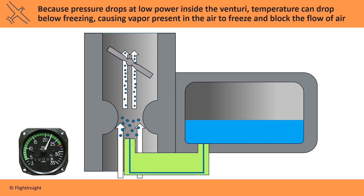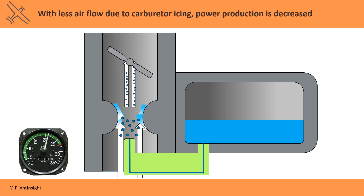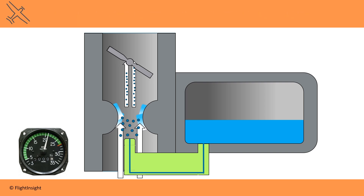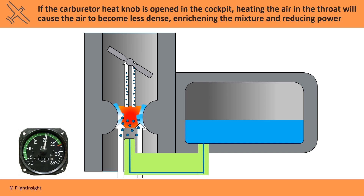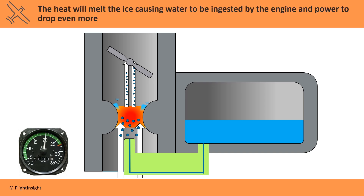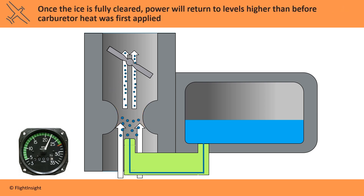Because pressure drops at low power inside the venturi, temperature can also drop below freezing, causing vapor present in the air to freeze and block the flow of air. Temperatures can drop below freezing even if the outside air temperature is as warm as 70 degrees Fahrenheit. With less airflow due to carb icing, power production is decreased. If the carburetor heat knob is opened in the cockpit, heating the air in the throat will cause the air to become less dense, enriching the mixture and reducing power. The heat will melt the ice, causing water to be ingested by the engine and power to drop even more. Once the ice is fully cleared, power will return to levels higher than before carburetor heat was first applied.